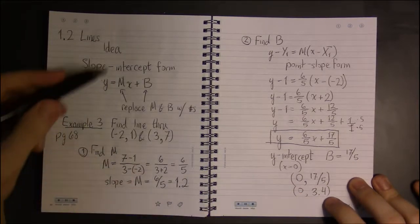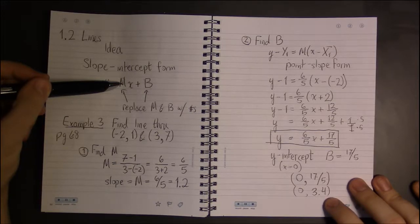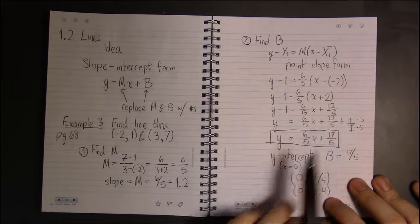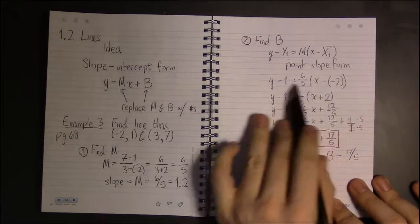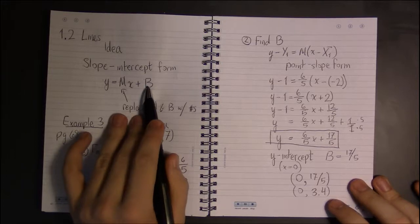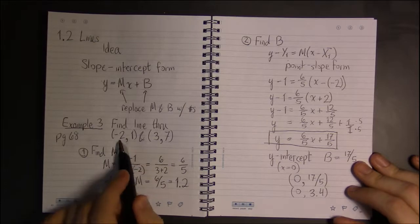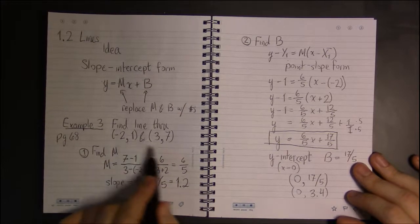And that's the general idea. If you're given a slope and a point, you can find the y-intercept. But, to find the slope, at least in this case, we need two points.